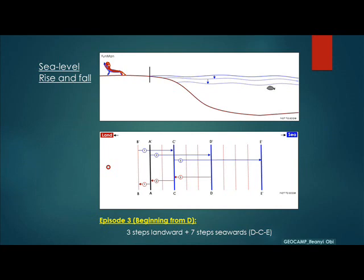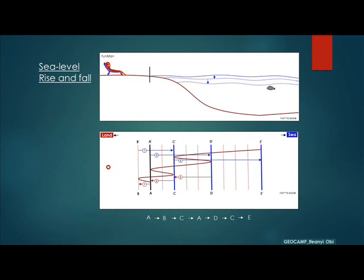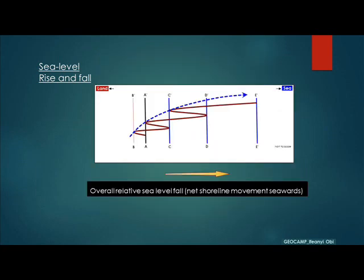Continuing with a third episode — three steps forward and seven steps backward from D through C to E. What this is saying is that the shoreline has gone from A to B, from B to C, then back to A and on to D, and finally lands at position E. Even though there are occasional landward movements, the shoreline has made a net basinward movement overall. We see that the relative sea level has fallen, because the net shoreline position shows it has moved further seaward.